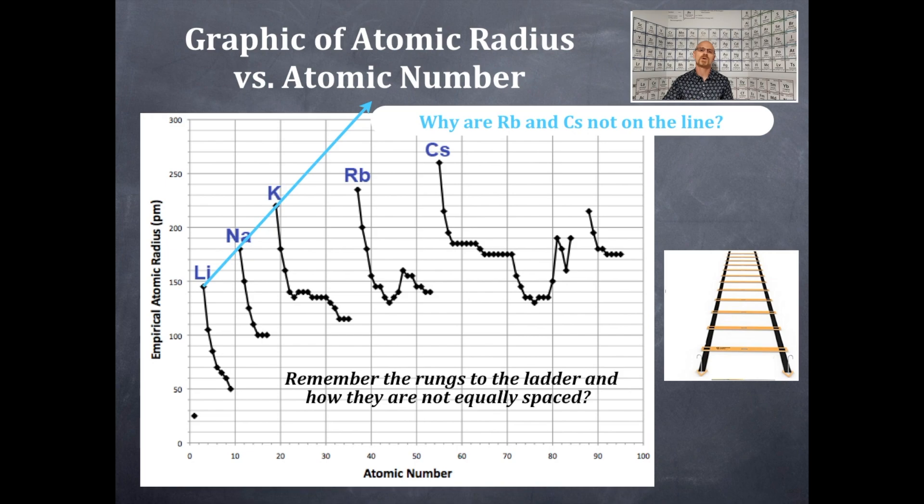As you get further and further away from the nucleus, then the rungs to the ladder get closer and closer together. That means n of 1 and n of 2 are the largest distances. And then n of 6 to n of 7 are very small distances. So as you get further from the nucleus, those orbitals don't get so far away from the nucleus.